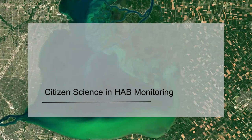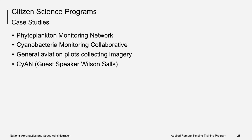In this next section, I will highlight a few citizen science efforts aimed at HAB monitoring. We'll review four projects: the Phytoplankton Monitoring Network, the Cyanobacteria Monitoring Collaborative, a project using general aviation pilots collecting imagery, and the Cyanobacteria Assessment Network, or Cyan. These citizen science programs are located within the U.S., but for our large international audience, we hope you'll gain ideas about how these programs are designed and implemented to help in designing your own regional citizen science program.